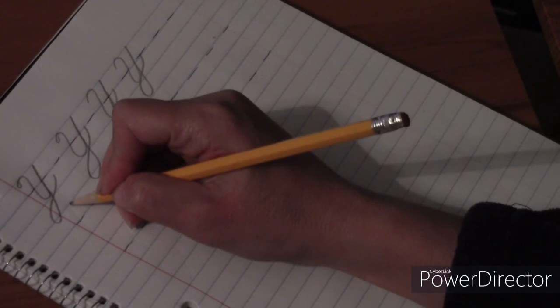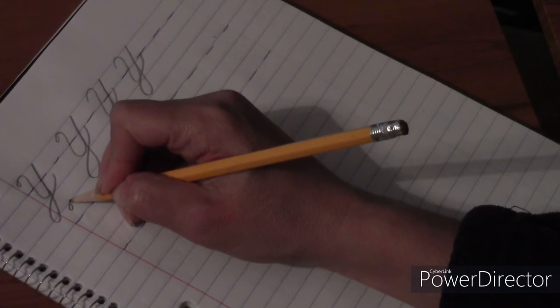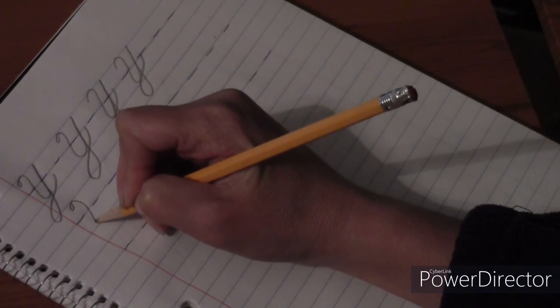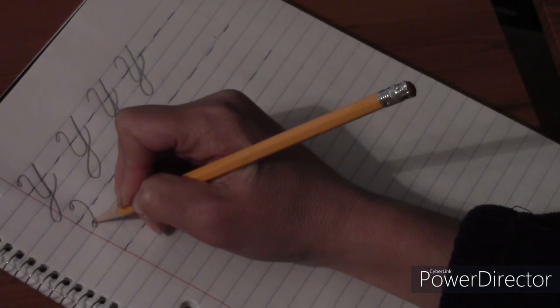Letter Z. Letter Z is like the loop-de-loo of a roller coaster. So it's gonna go tiny loop and then as we come down, we're gonna bump the bottom line, put a tiny loop in again.